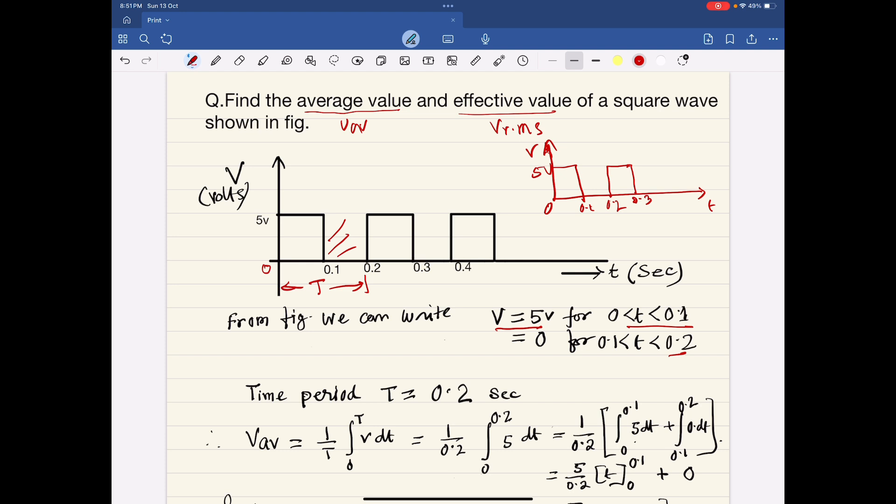Time period T is equal to 0.2 seconds. V average, so average value means area of the wave. We will integrate 0 to T, V dt by base.